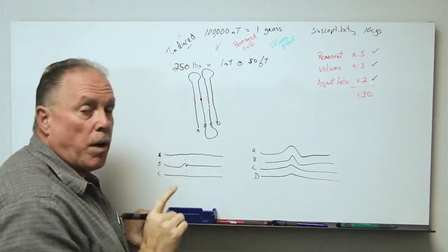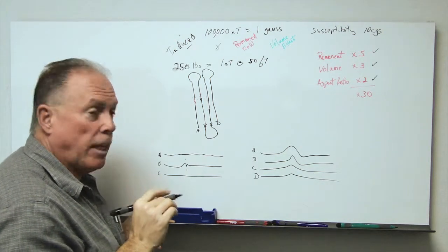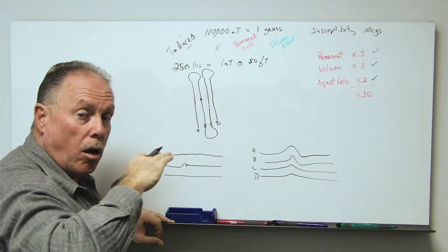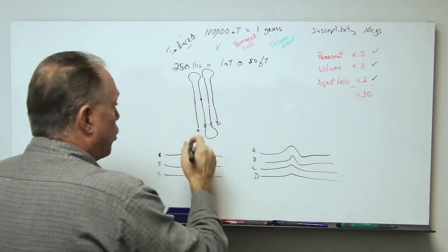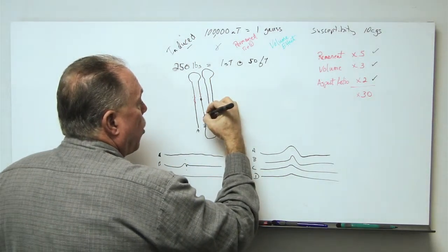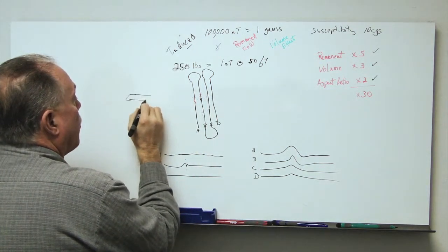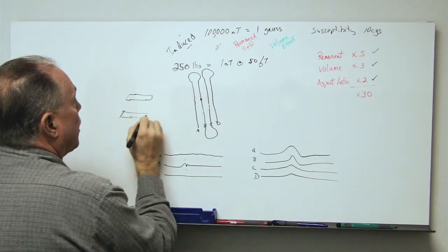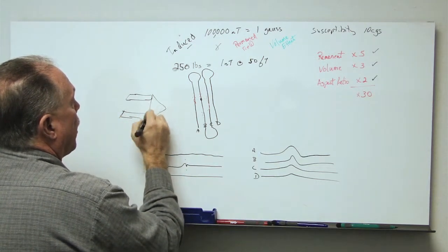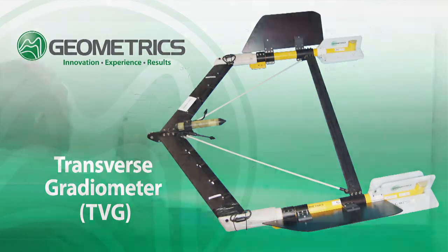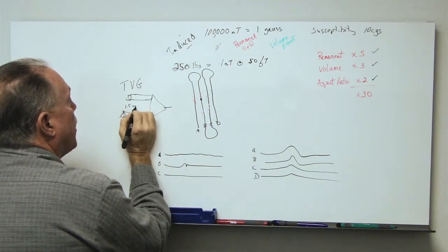But the transverse gradiometer improves this by giving us the slope of the magnetic field along the line. And so, if we tow a sensor array where we have one sensor, and then we have a second sensor, and we are towing a transverse gradiometer, TVG, where we have a separation here of perhaps 1.5 meters,